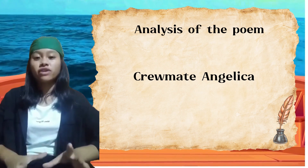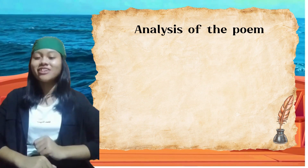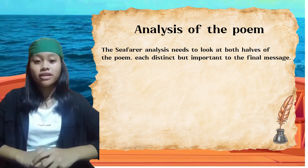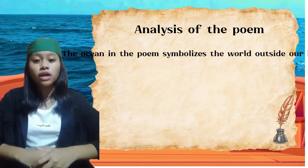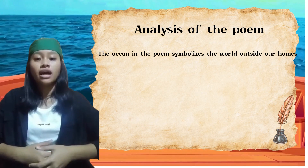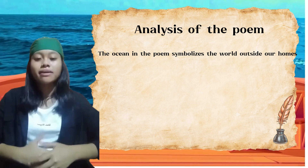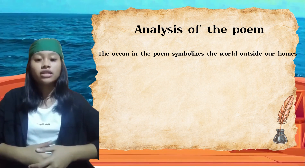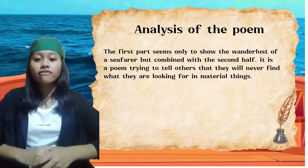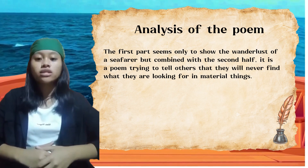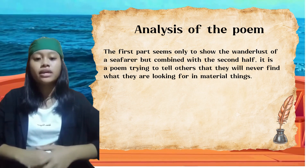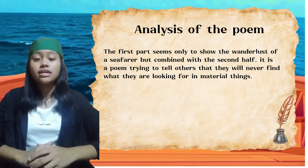Ahoy, mateys! I'm your crewmate Angelica and I'm going to continue the analysis of the poem. The Seafarer analysis must look at both halves of the poem — distinct but important to the final message. The ocean in the poem represents the world outside our homes. The narrator makes various distinctions between those who have the comforts of home and family and the cold, miserable life of a sailor. Those who live inland and never explore are happy, but they cannot understand the plight of those who, like the narrator, seek something beyond the comforts of food and love. The first part shows the wanderlust of a seafarer, but combined with the second half, it is a poem telling others they will never find what they're looking for in material things. The narrator spends his life at sea looking for something he cannot describe, yet hating the experience. In the second half, he admits that the thing people seek is God, though they may not know it.